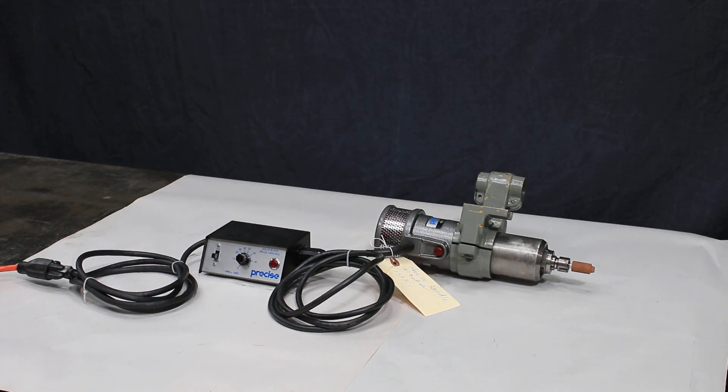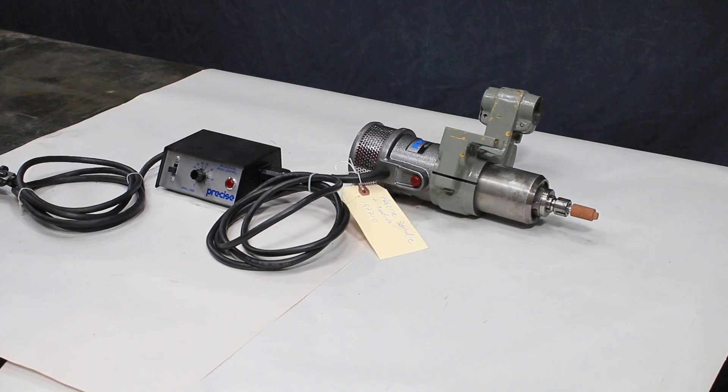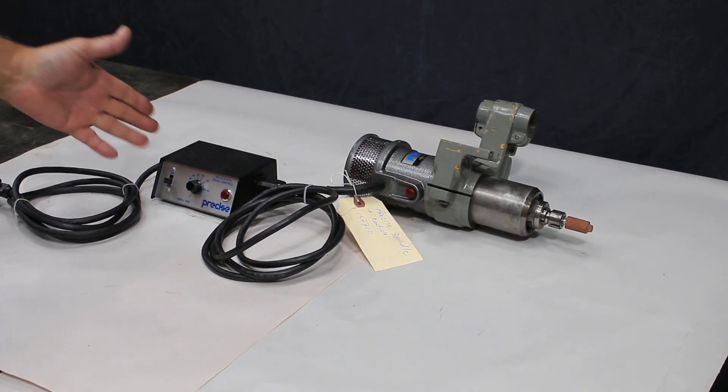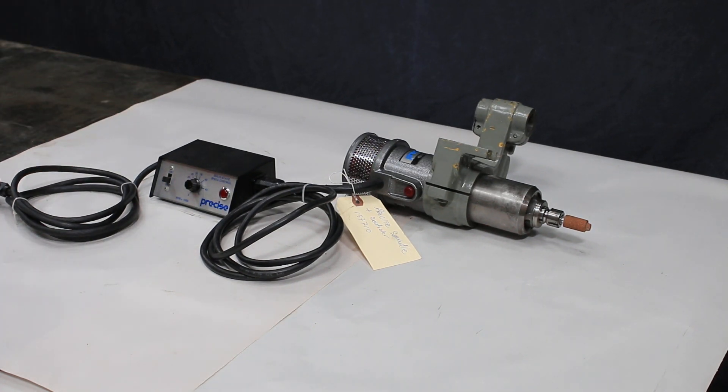We have here for you a nice Precise DC driven spindle. I believe it's DC, but it also has the power supply made by Precise. This is a model 65S and it can go up to 45,000 RPM.